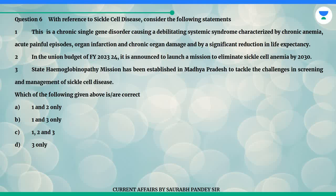Question 6. With reference to sickle cell disease, consider the following statements. One: This is a chronic single-gene disorder causing a debilitating systemic syndrome characterized by chronic anemia, acute painful episodes, organ infarction and chronic organ damage, and by a significant reduction in life expectancy. Two: In the Union Budget of FY 2023-24, it was announced to launch a mission to eliminate sickle cell anemia by 2030. Three: State Hemoglobinopathy Mission has been established in Madhya Pradesh to tackle the challenges in screening and management of sickle cell disease.